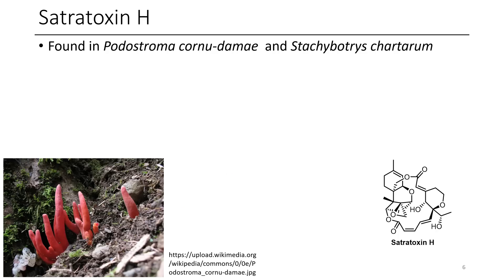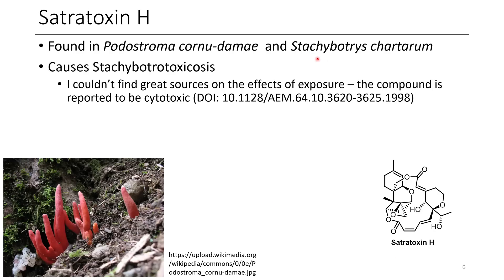The next compound is satratoxin H. Here we have these interesting looking nature's pool noodles. There are several interesting mycotoxins these fungi contain, but the one we're talking about briefly is satratoxin H. This is found in Podostroma cornu-damae, but it also occurs in black mold. If you think you have black mold in your house, this is your chance to go and deal with it right now.